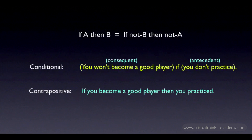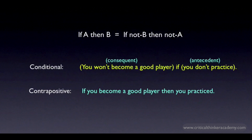The challenge with problems like these is not to get turned around and mistake an antecedent for a consequent. The most common error would be to interpret the contrapositive as 'if you practice, then you'll become a good player.' This is very tempting, but it's not entailed by the original claim. The original claim doesn't say that if you practice, you're guaranteed to become a good player. All it says is that if you don't practice, then you're certainly not going to become a good player. So what we can infer is that if you end up becoming a good player, then we can be sure that you practiced. The value of these translation rules is that they keep you from assuming that you know more than you do based on the information given.